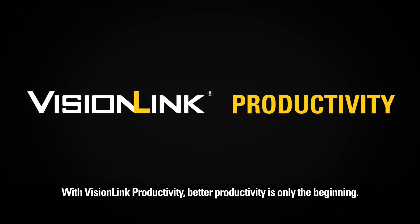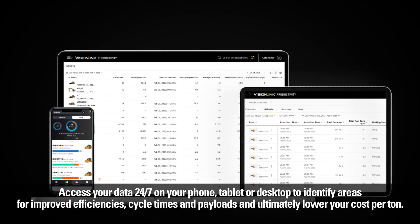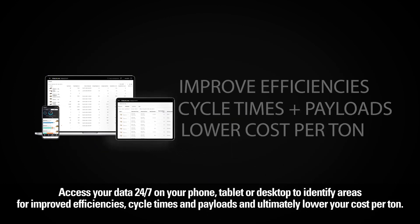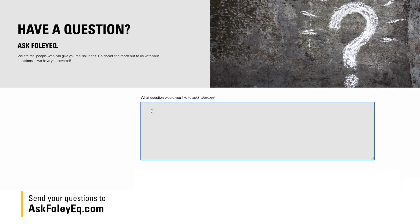With VisionLink Productivity, better productivity is only the beginning. Access your data 24-7 on your phone, tablet, or desktop to identify areas for improved efficiencies, cycle times and payloads, and ultimately, lower your cost per time.